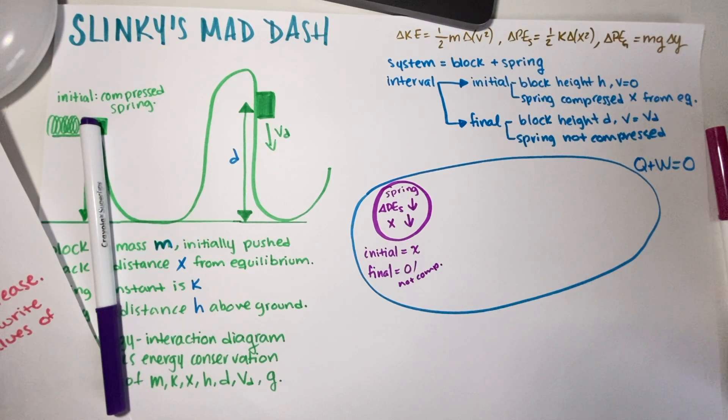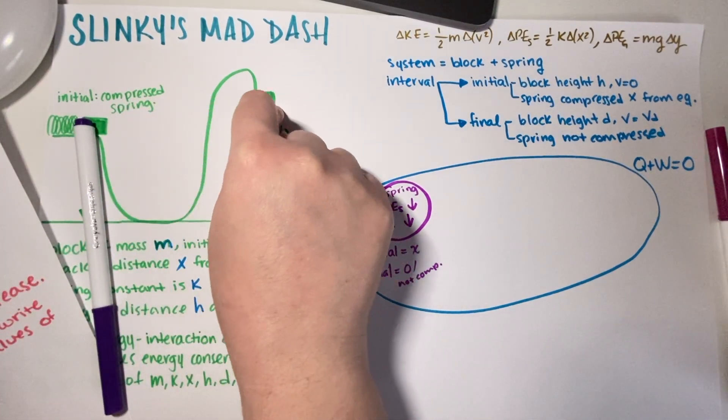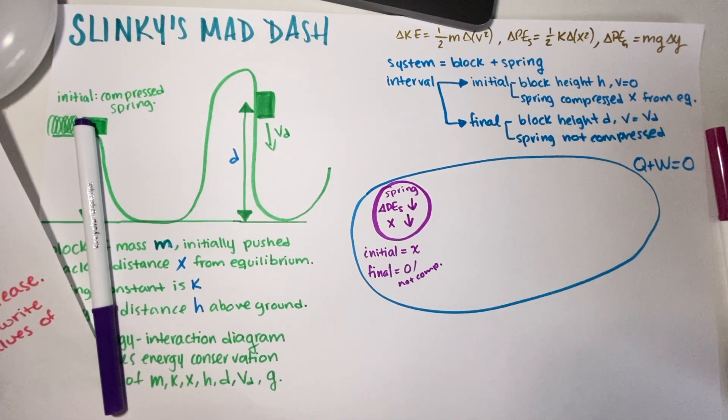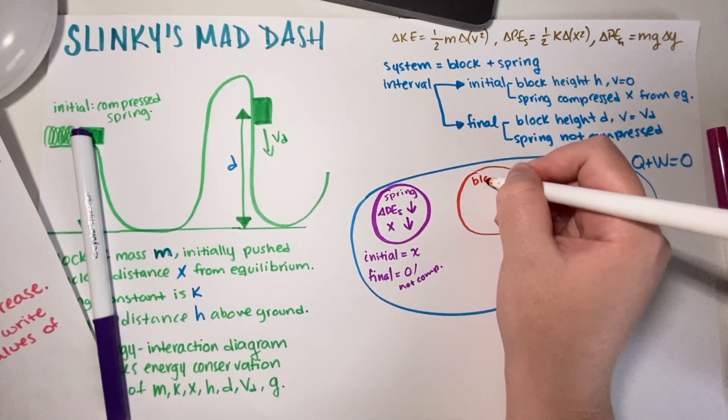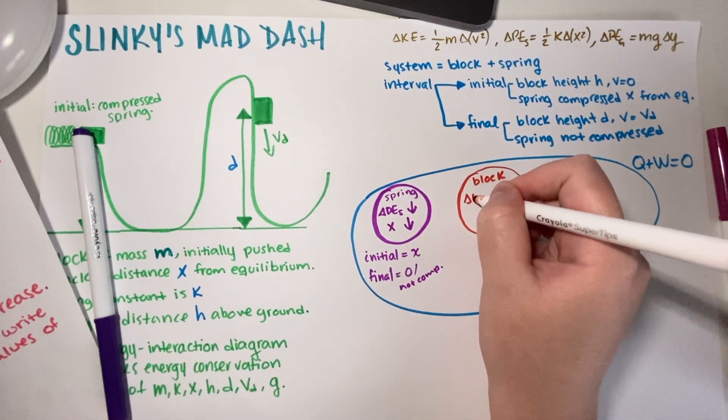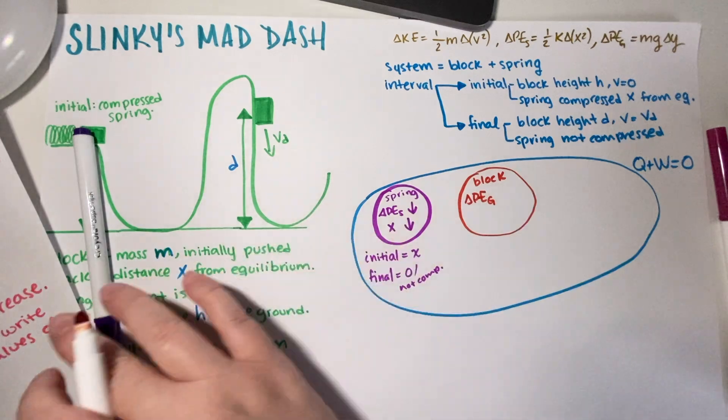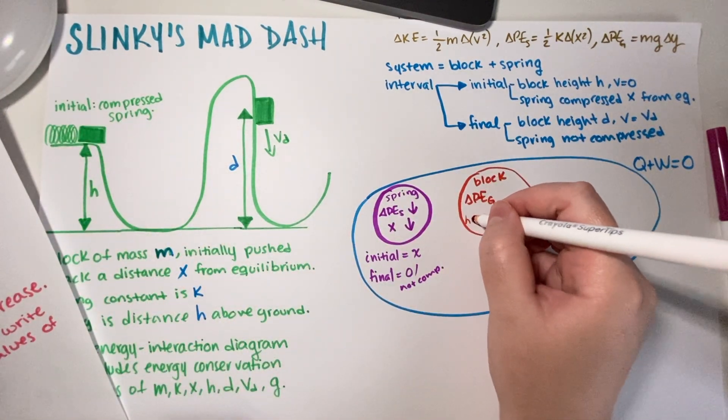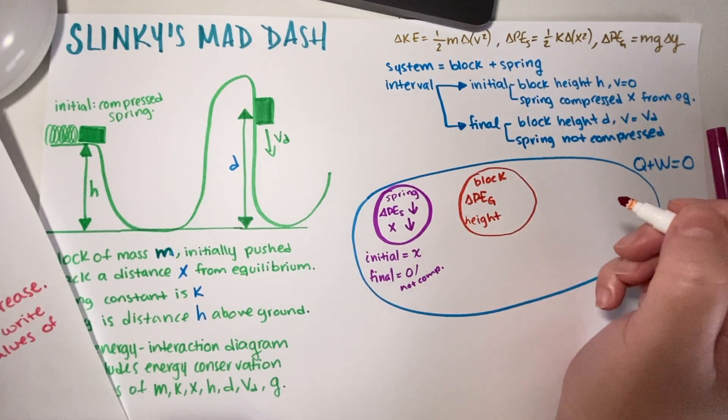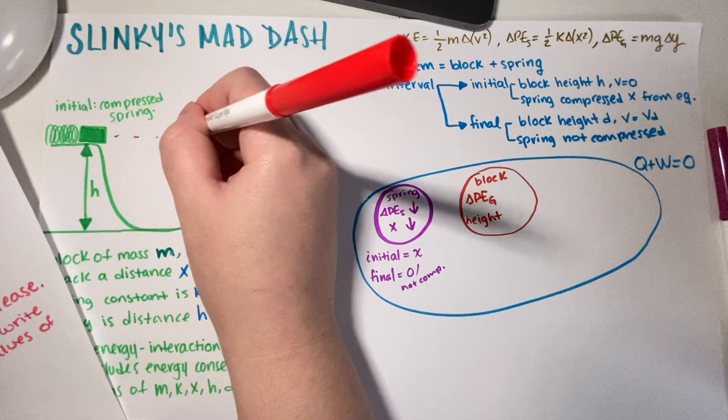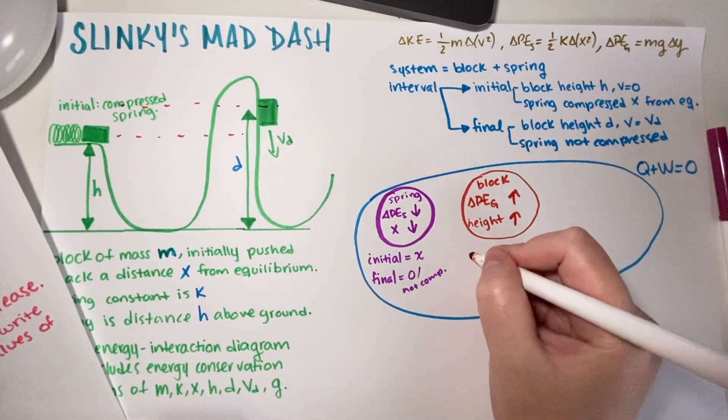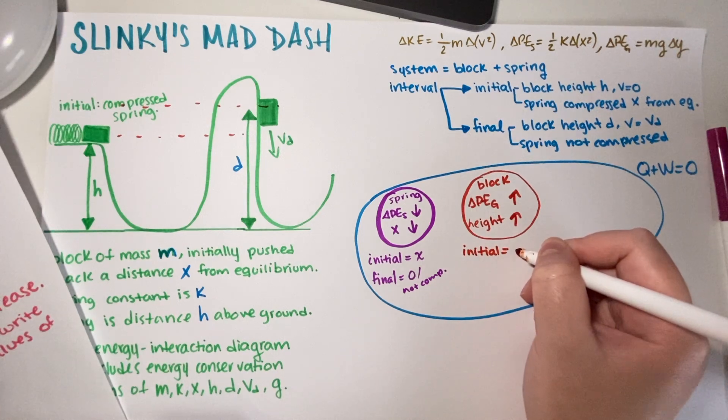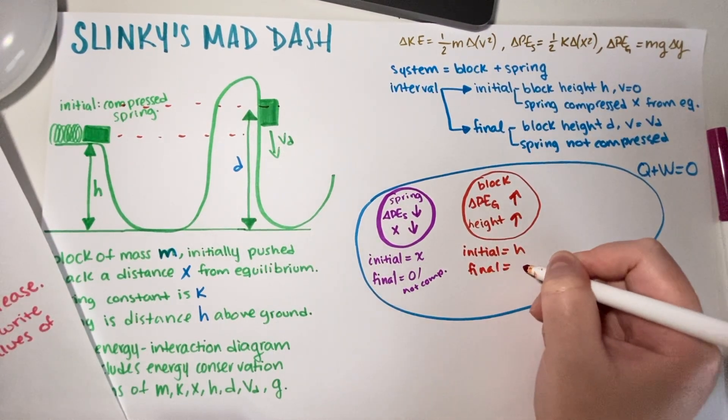So now let's move on to the block. The block, the first thing that happens going from here to here is that we had a change in height. So because we had a change in height, that means that potential energy is changing. So block, but now this one is due to gravity. And that would be because the height is changing. So we went from this height to this height. So that means that we went up. That would mean that this goes up because this goes up. And then your initial is H, then your final is D.